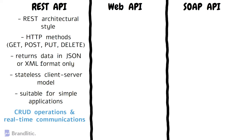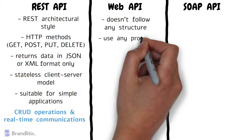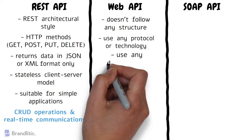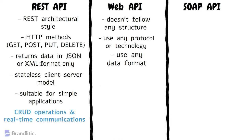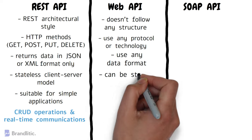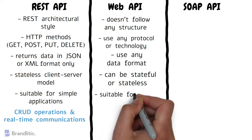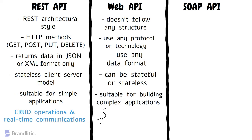Web API doesn't follow any specific architecture or structure. It can use any protocol or technology to communicate between clients and servers. It can use any data format including JSON, XML, CSV, and many others, and can be stateless or stateful depending on the requirements. It is suitable for building complex applications that require integration with different systems and technologies.